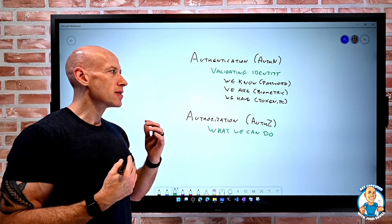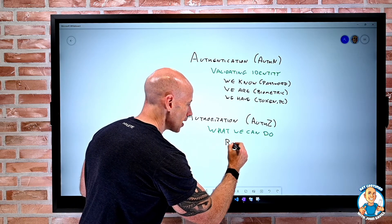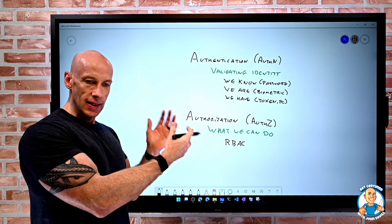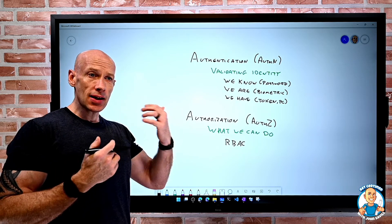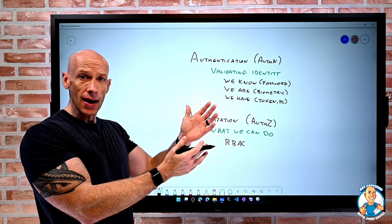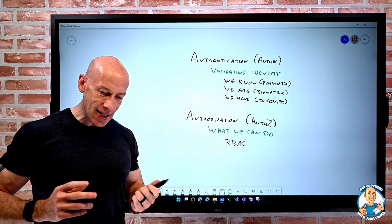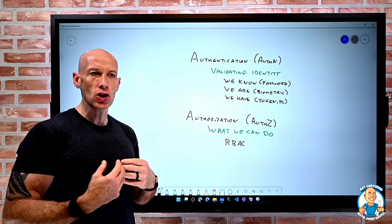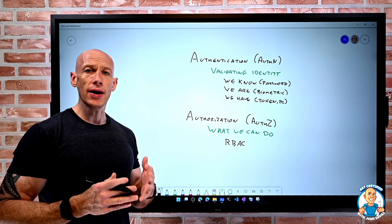In Azure, we always think about role-based access control. The idea that there's some role and it's given to an identity at some kind of scope. So the pattern is I have to prove I am who I say I am through authentication. And then once I'm authenticated, that identity has certain privileges, certain rights. That's the authorization of what I can do.